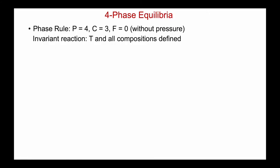We've looked at cases where a liquid is coexisting with one other solid phase and with two other solid phases. Now let's go to four-phase equilibria, where the liquid is coexisting with three other solid phases. The maximum number of phases that can coexist in a ternary system is four, and if we take away pressure, there are no degrees of freedom — so a four-phase equilibrium is an invariant reaction. The temperature and the compositions of all of the coexisting phases are defined.